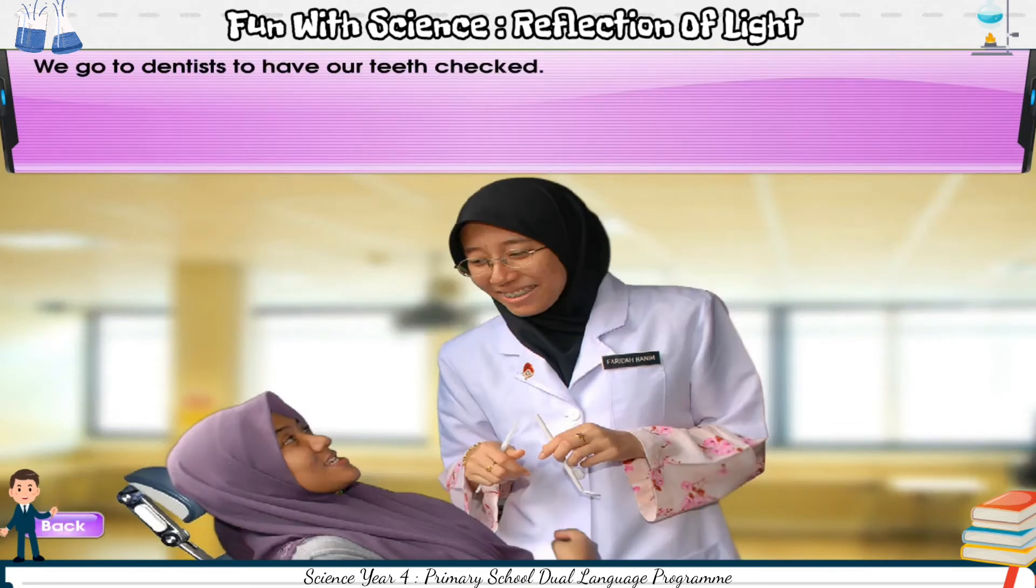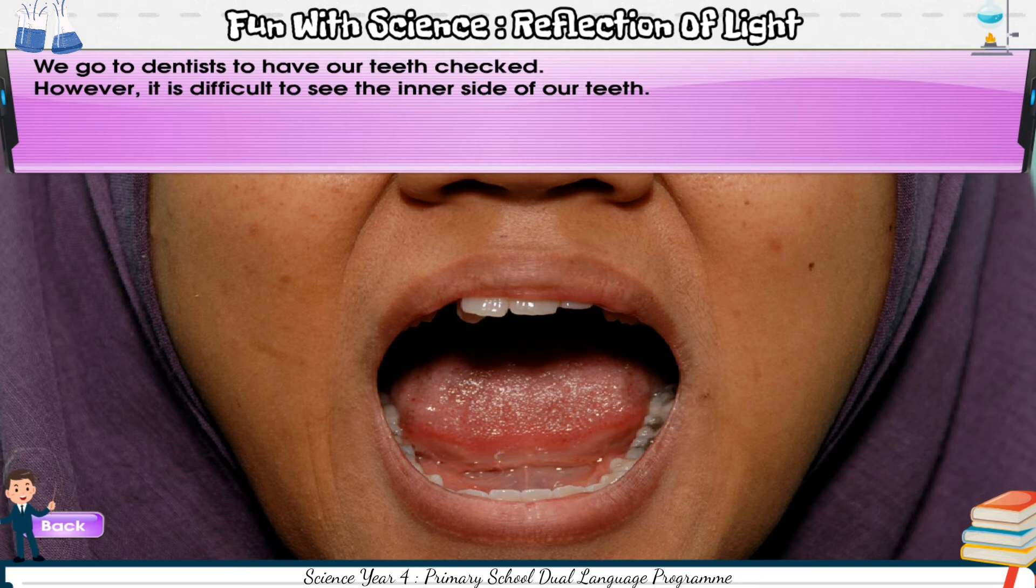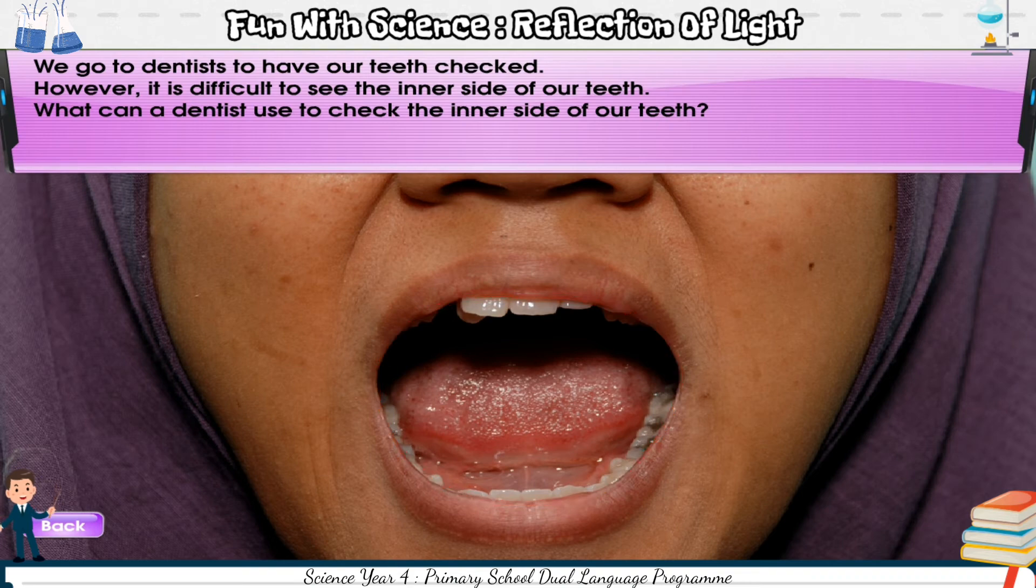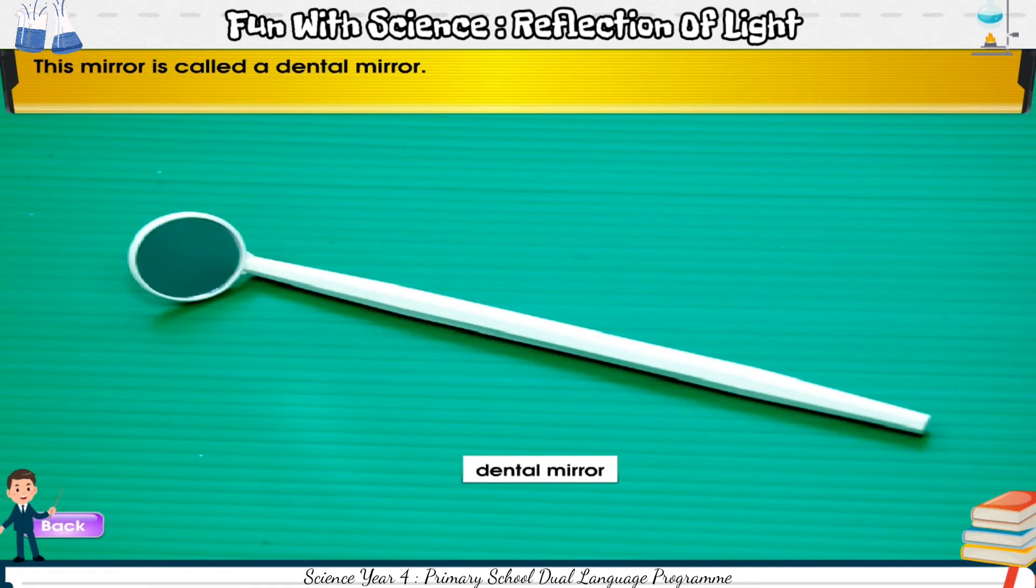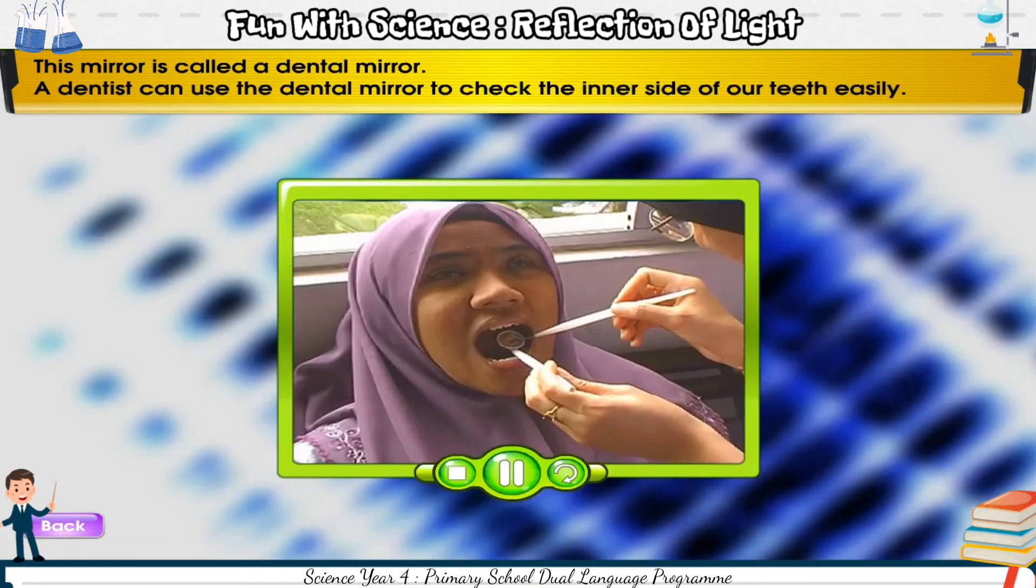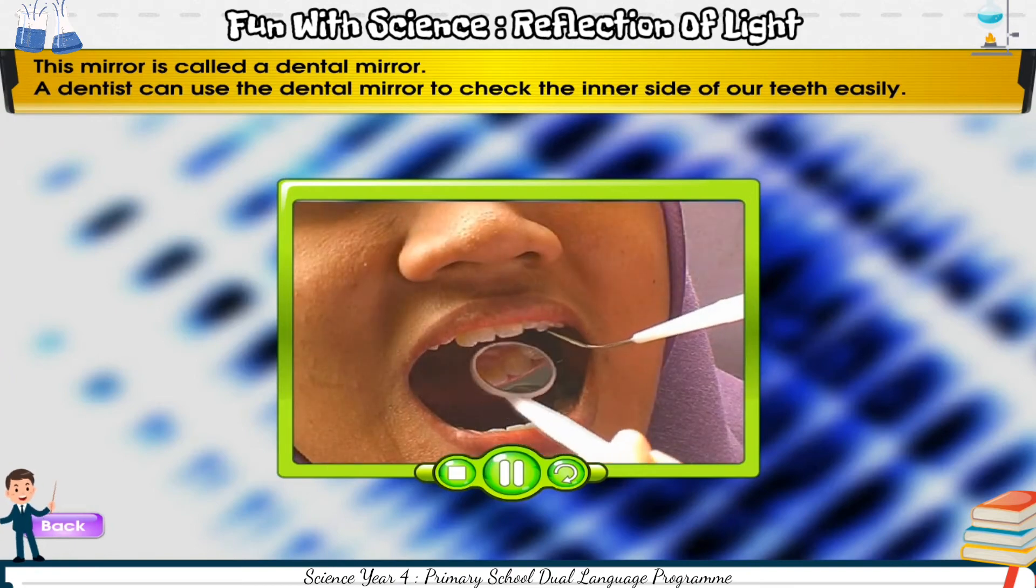We go to dentists to have our teeth checked. However, it is difficult to see the inner side of our teeth. What can a dentist use to check the inner side of our teeth? Discuss this with your friends. Then, click on the dentist. This mirror is called a dental mirror. A dentist can use the dental mirror to check the inner side of our teeth easily.